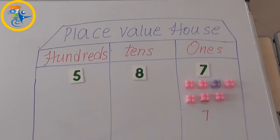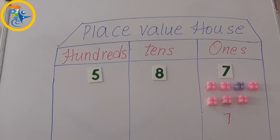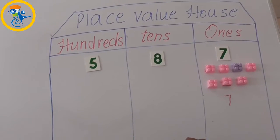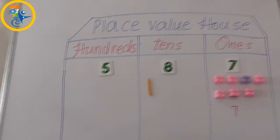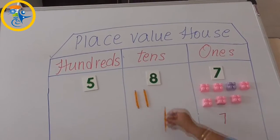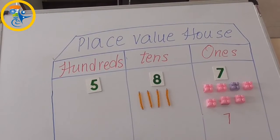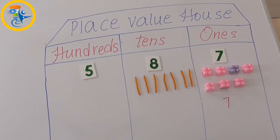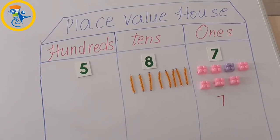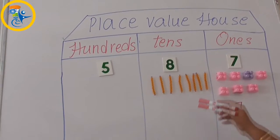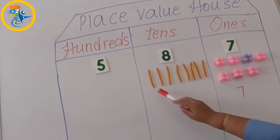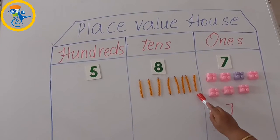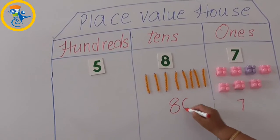Now let us move to the tens room. I am having 8 at tens. I am going to place this grid. This is 1 ten, 2 tens, 3 tens, 4 tens, 5 tens, 6 tens, 7 tens, and 8 tens. So 8 at tens is 10, 20, 30, 40, 50, 60, 70, and 80. So 8 at tens is 80.